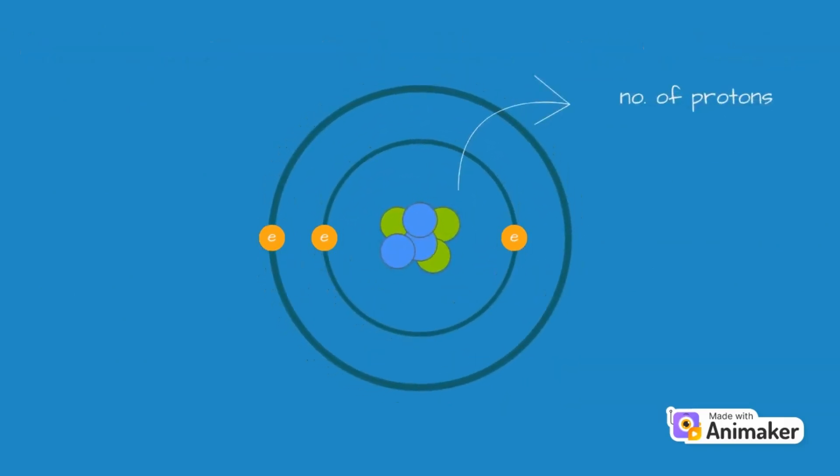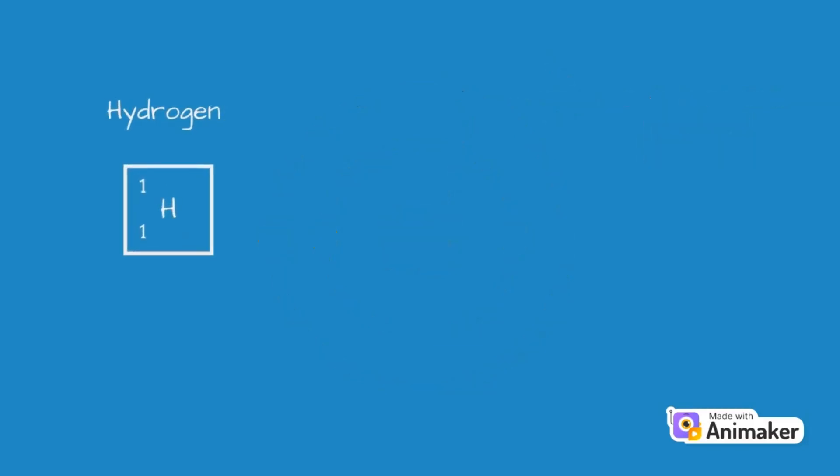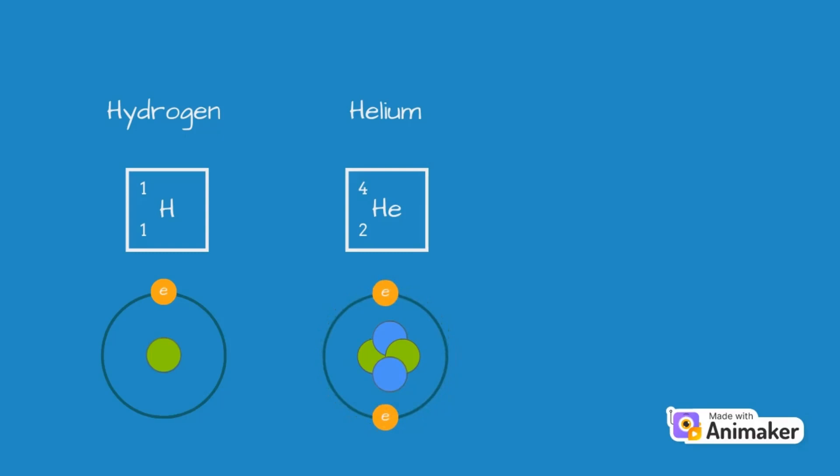Now, the number of protons in the nucleus of an atom determines which element it is. The smallest element is hydrogen. It has one proton in the nucleus and one electron orbiting it. The next smallest is helium. It has two protons and two neutrons in the nucleus and two electrons orbiting them. In total there are more than 100 elements.